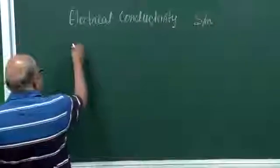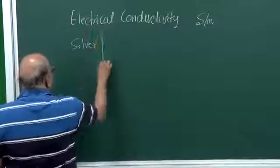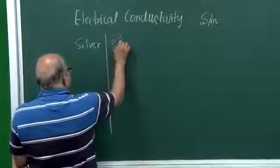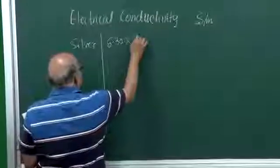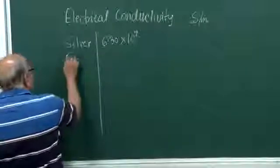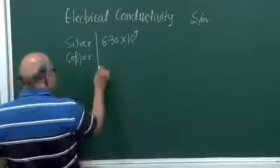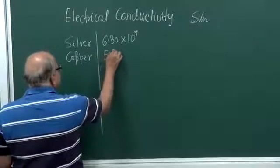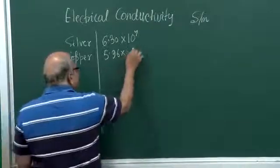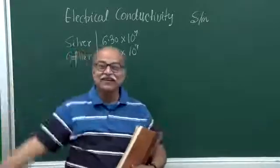Silver. Let's start with silver. The silver conductivity is 6.30 into 10 power 7 in this SI unit. Copper is 5.96 times 10 to the power 7. If you can do a silver wiring in your house, that will be much more efficient as far as the electric conduction is concerned.